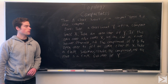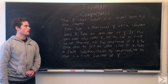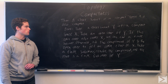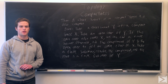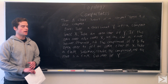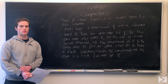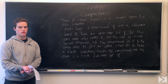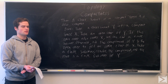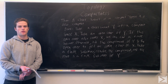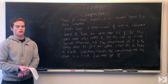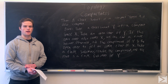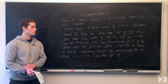One more theorem: a closed subset of a compact space is also compact. Take a closed subset Y of some compact space X, and take any open cover of Y. If the open cover covers X as well, then because X is compact, we can take some finite sub-cover that also covers Y, and that gives us a finite sub-cover in that case.